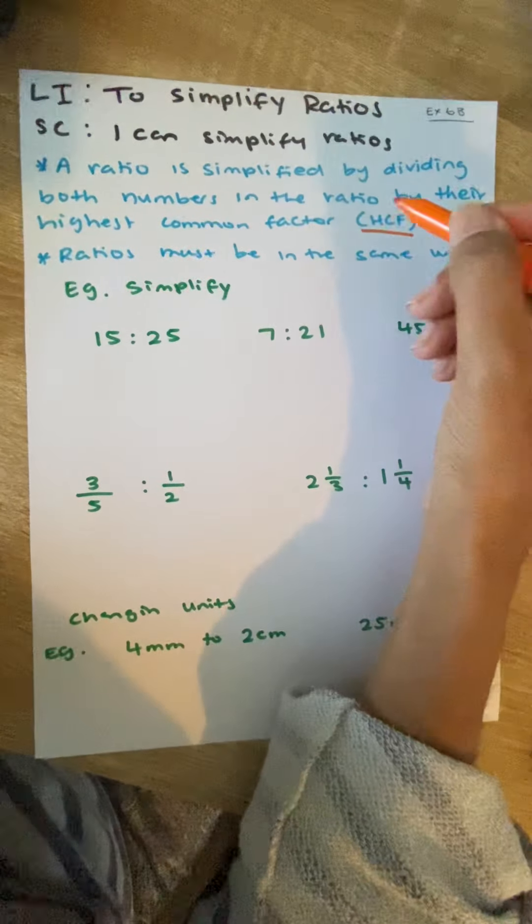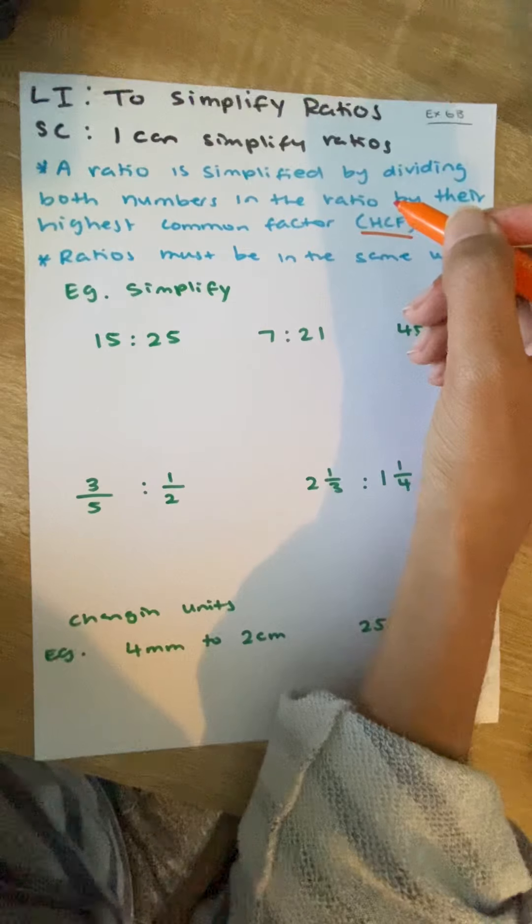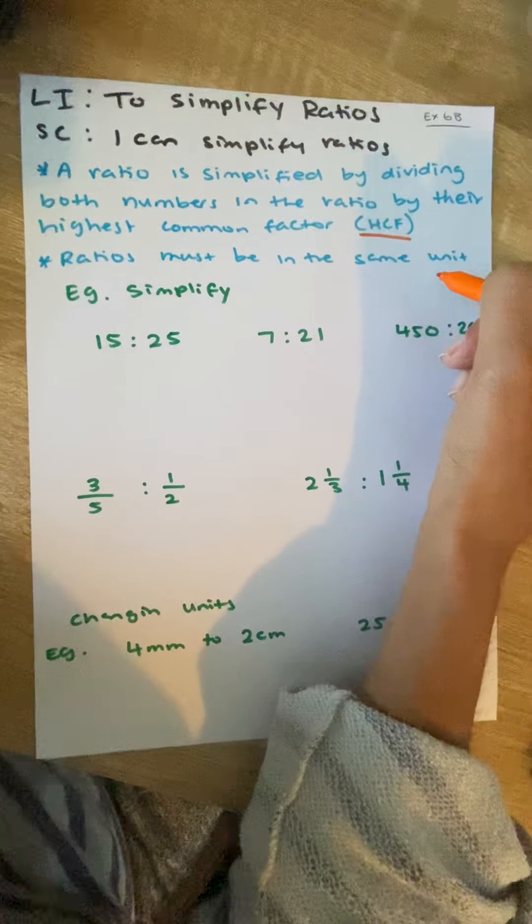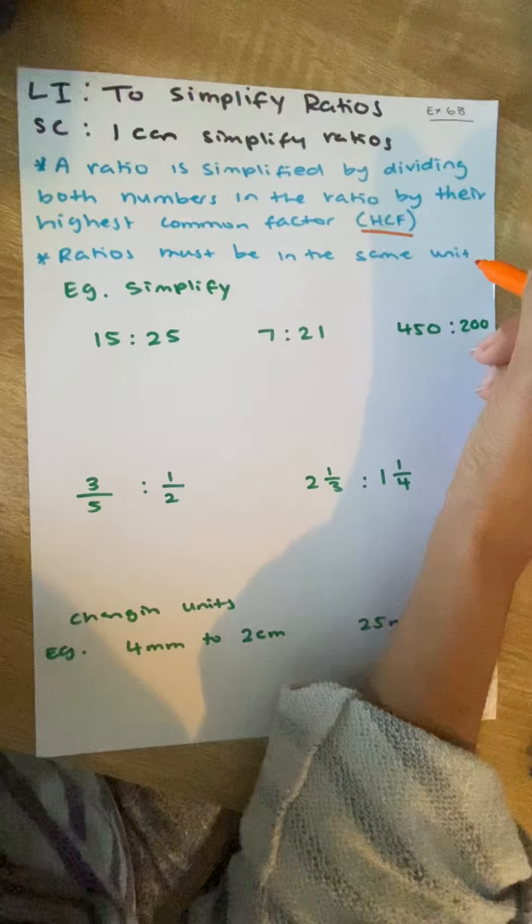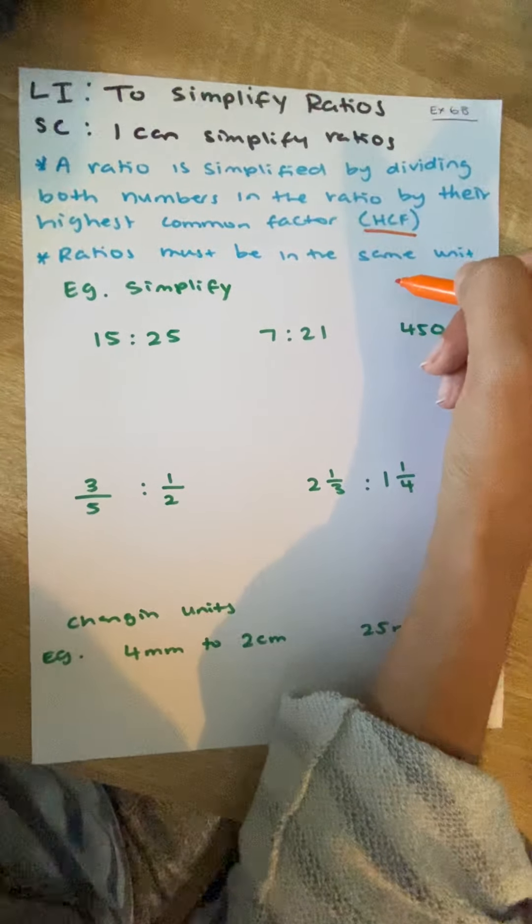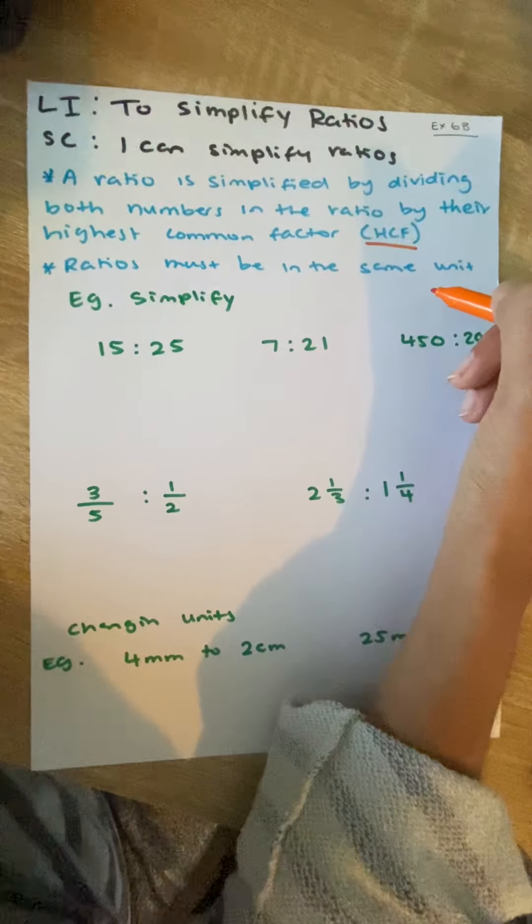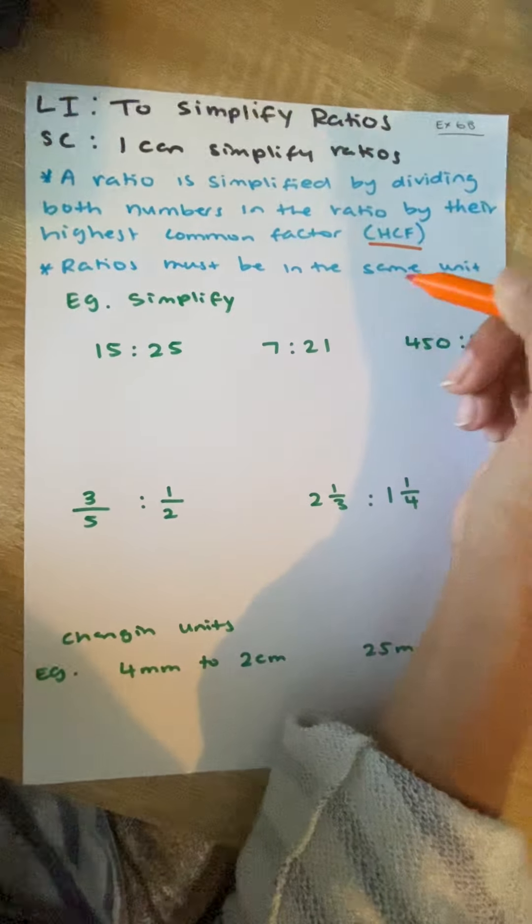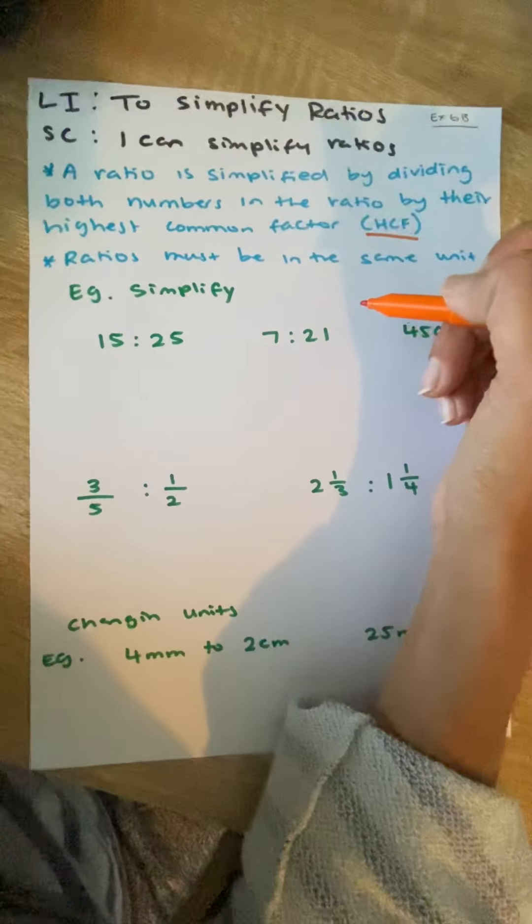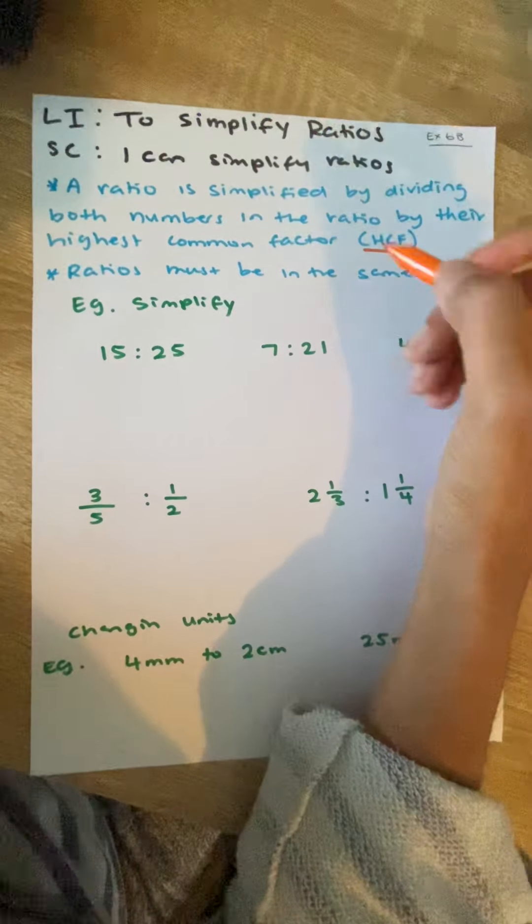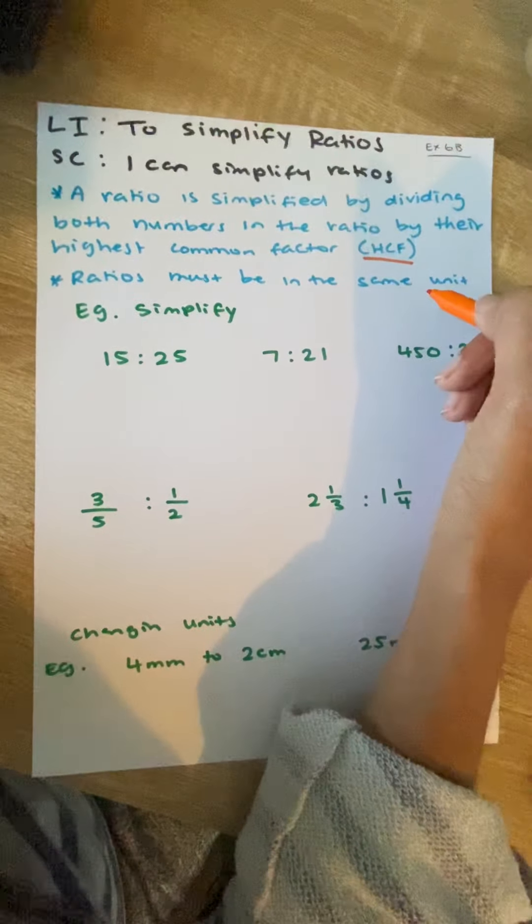So both of your numbers need to be in kilograms, we can't have one number in kilograms and one number in grams, both of your numbers need to be in centimeters, or both of them need to be in meters, or both of them need to be in kilometers, we can't have one of one unit and another of another unit, so we need to learn how to simplify that in that way as well.